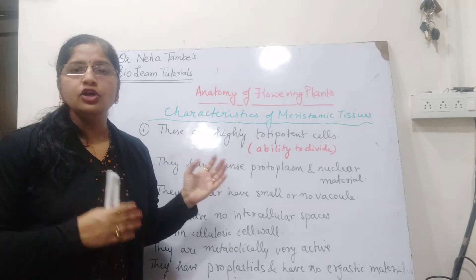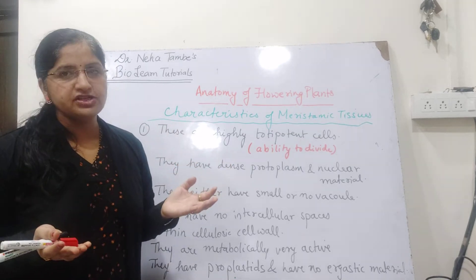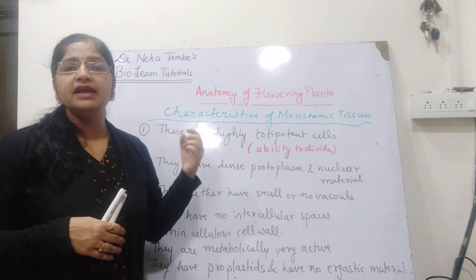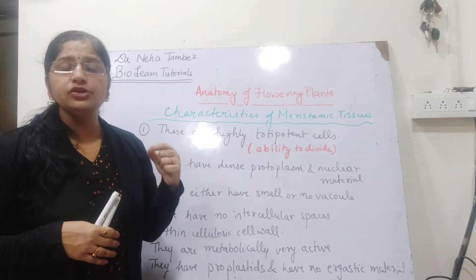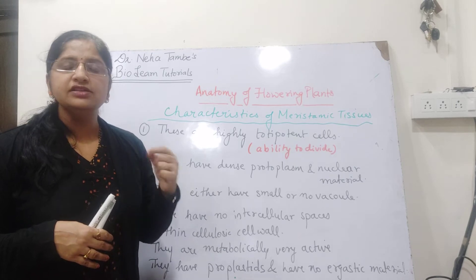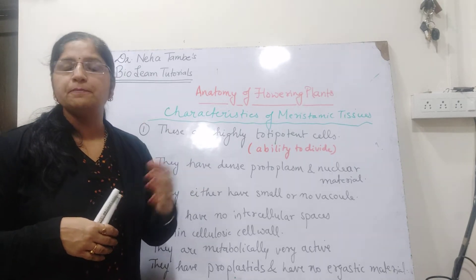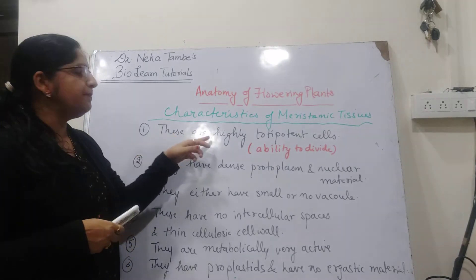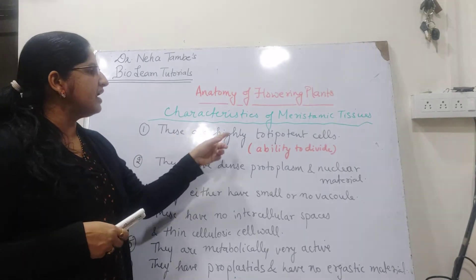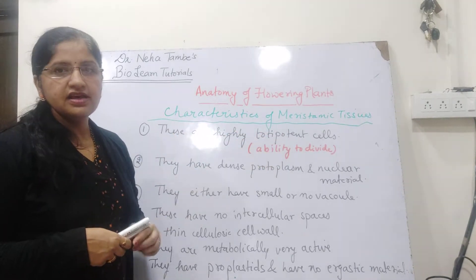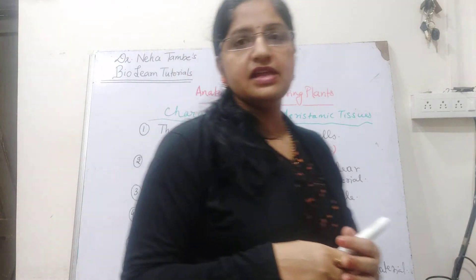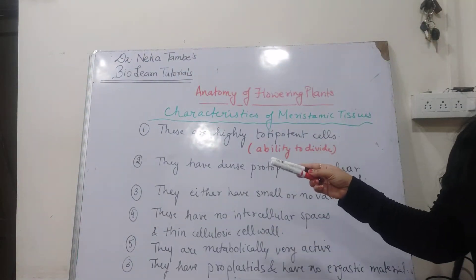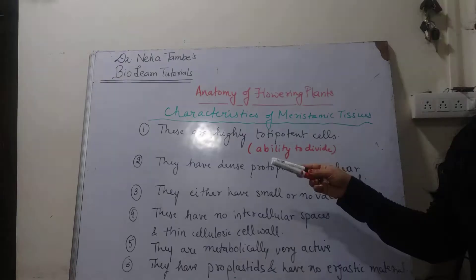Agar ye divide na kare, toh plant body ka formation na ho. Early embryonal cells mein, sabhi cells mein highly totipotent activity hoti hai. Jiske chalte phir further primary meristems bante hain. So the first property: they are highly totipotent cells, meaning these are actively dividing cells.